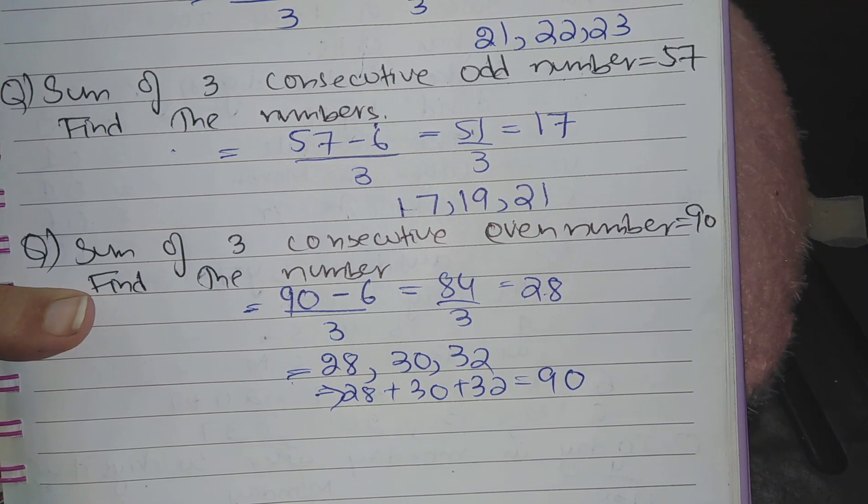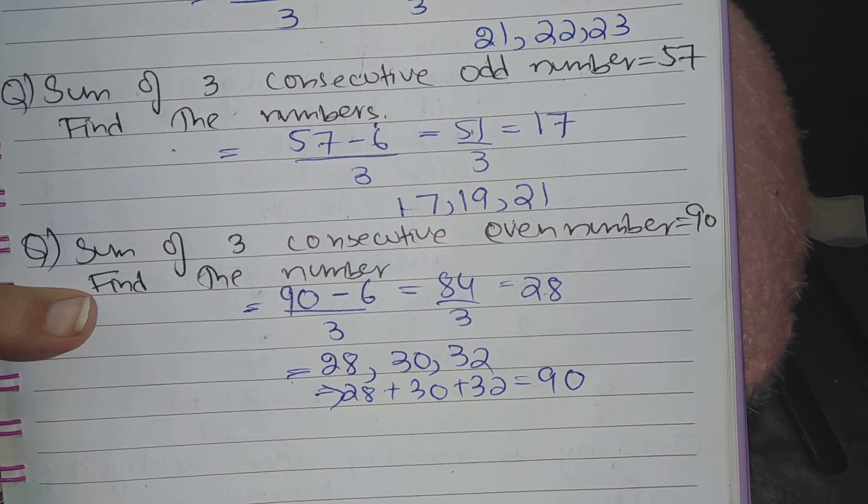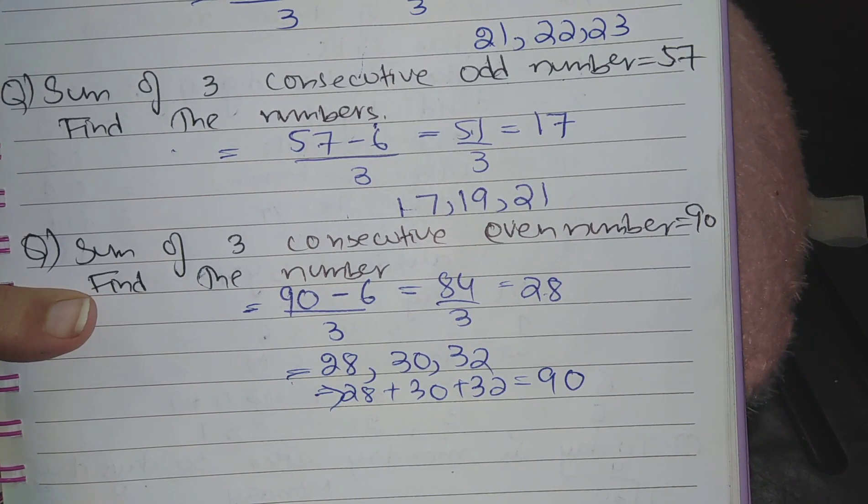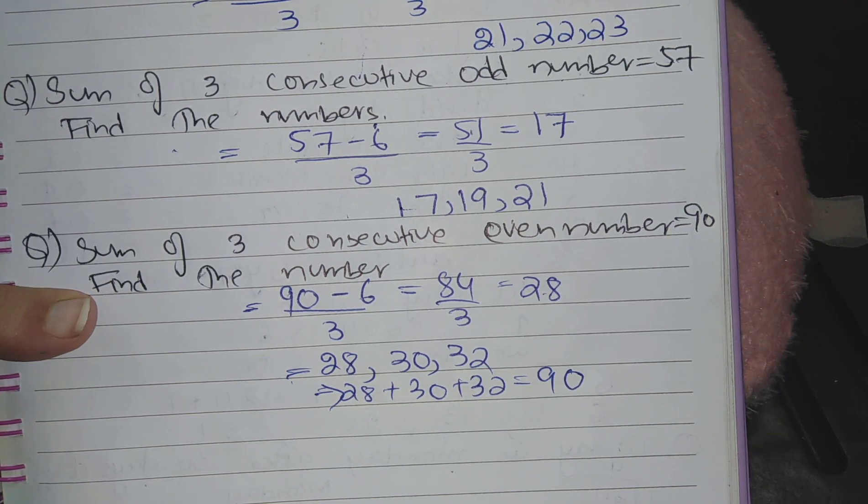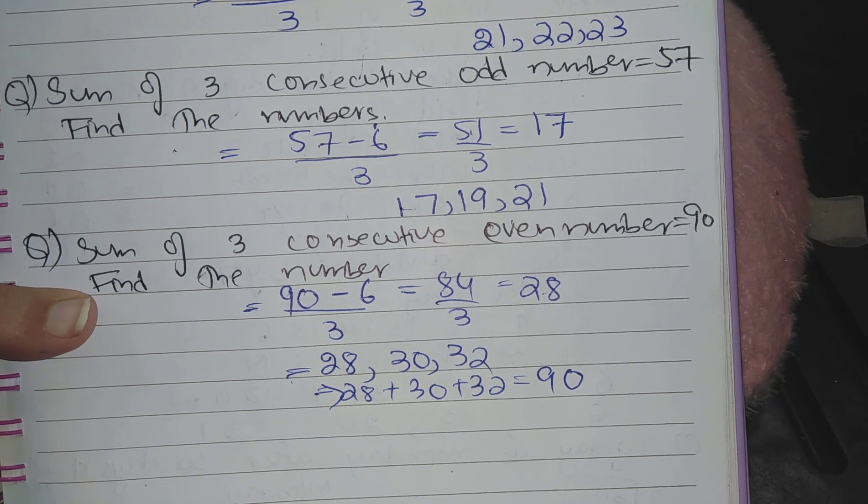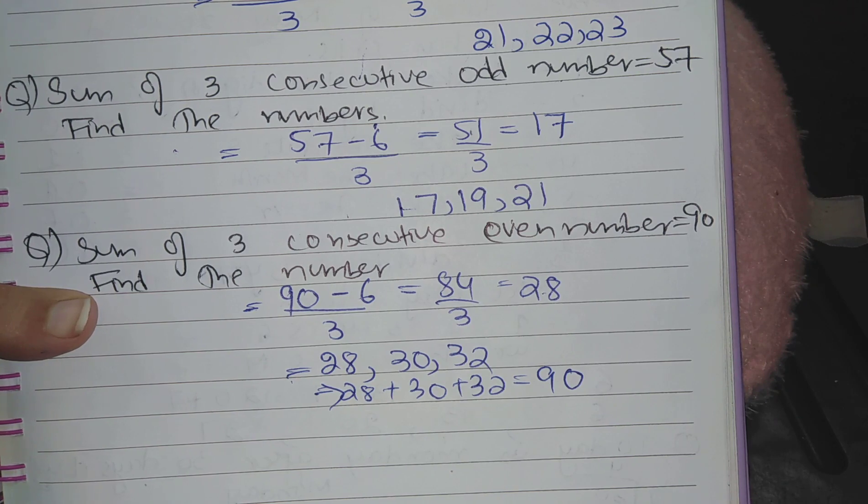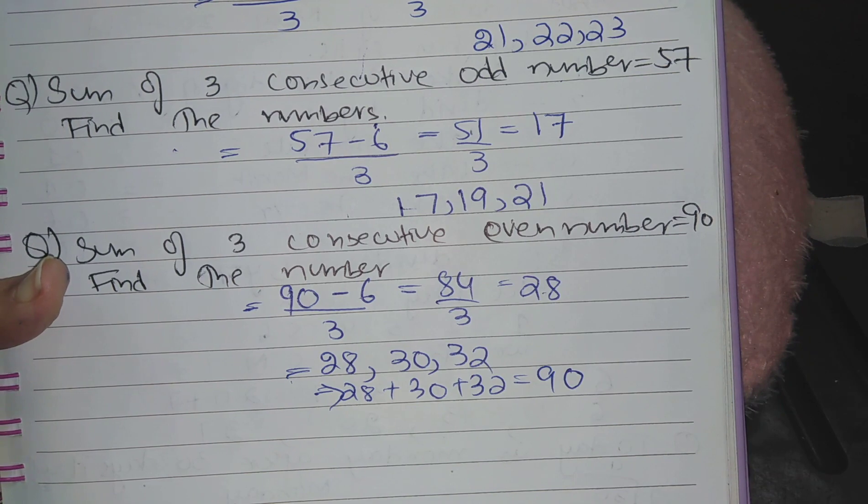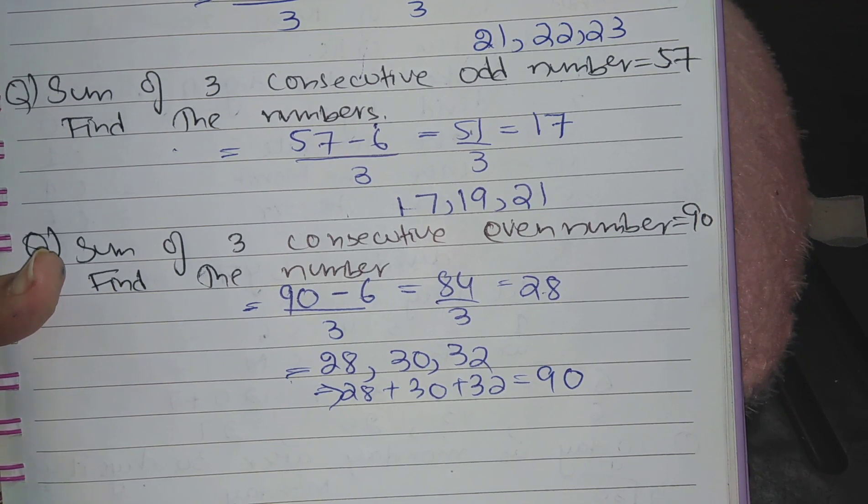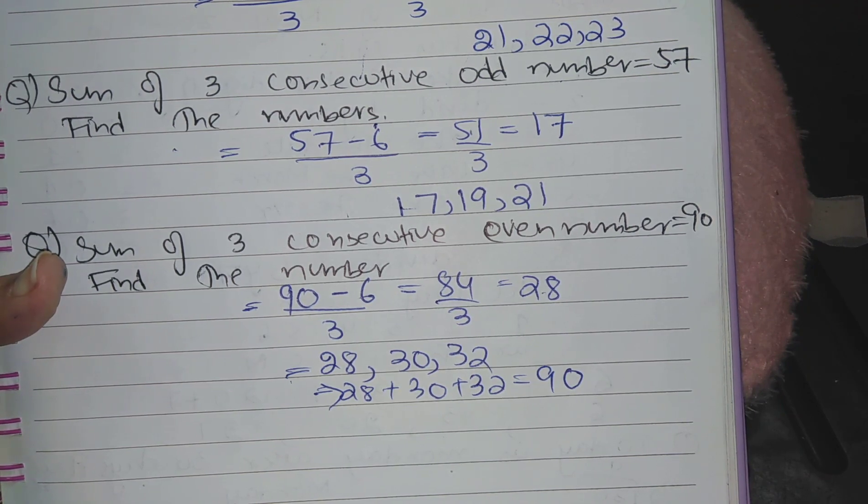In this lecture you have learned three basic tricks to find the numbers whenever their sum is given: when consecutive numbers sum is given, consecutive odd numbers sum is given, or consecutive even numbers sum is given. By learning these shortcut tricks it will be very easy for you to solve the questions just in seconds. Like and share my video and subscribe my channel.